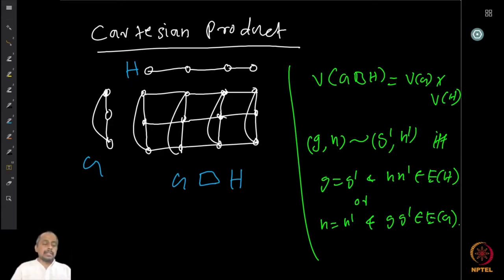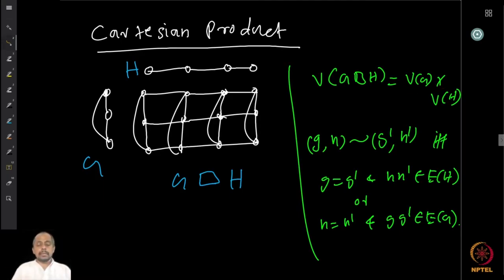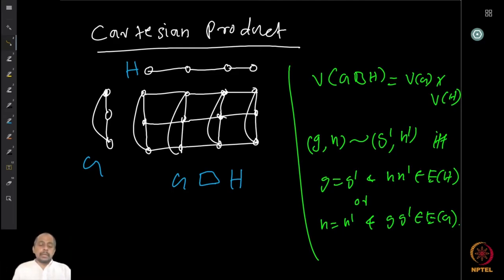This product is defined on the Cartesian product of the vertex sets of G and H. So the vertex set of the product graph is V(G) times V(H) — ordered pairs where the first component is from the vertex set of G and the second component is from the vertex set of H. That is the vertex set of the product graph.